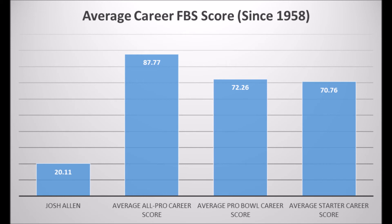When you draft a quarterback in the top 10, you're drafting with the expectation that they're going to become an all-pro quarterback. When every single quarterback prospect since the 1958 NFL Draft Class hits a certain number in terms of their career FBS data, and Josh Allen doesn't hit that threshold — meaning there has never been a quarterback to become a multiple all-pro or multiple Pro Bowl type who hit the numbers Josh Allen made — you have to be very scared at that point. There's no other way around it.